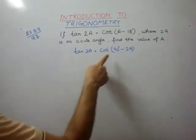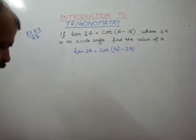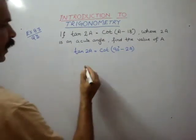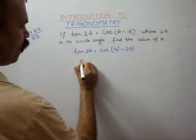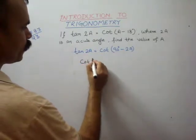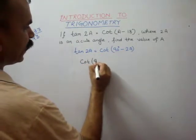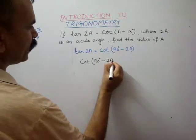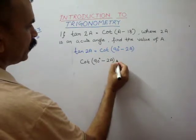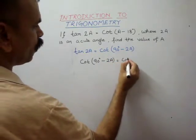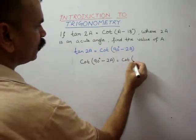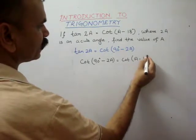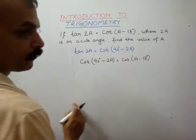Now, we will put this value in, so our cot(90 degrees minus 2a) is equal to cot(a minus 18 degrees).